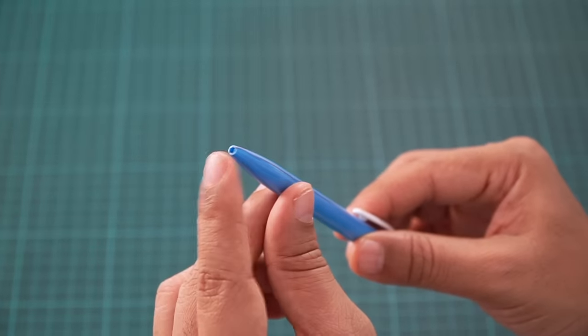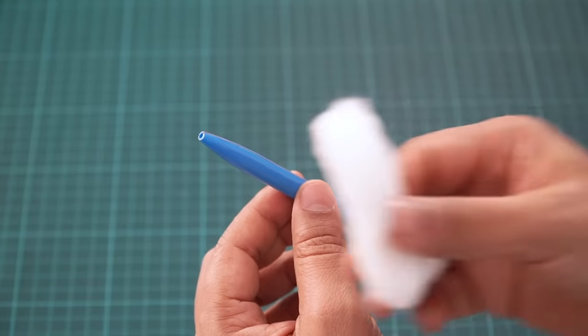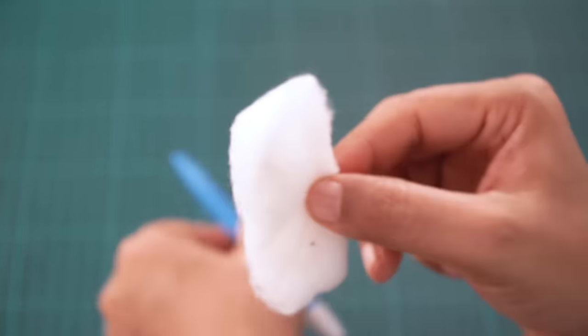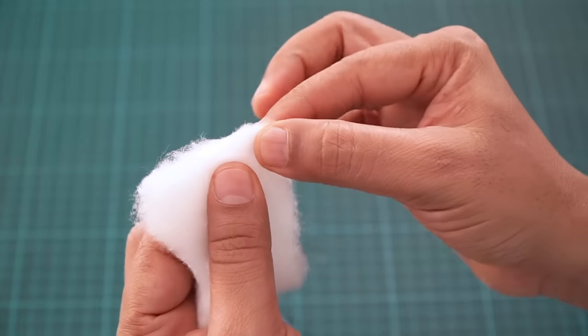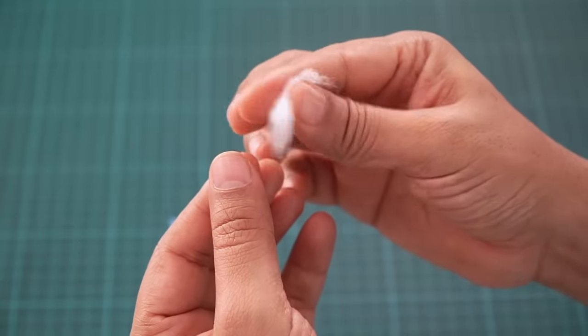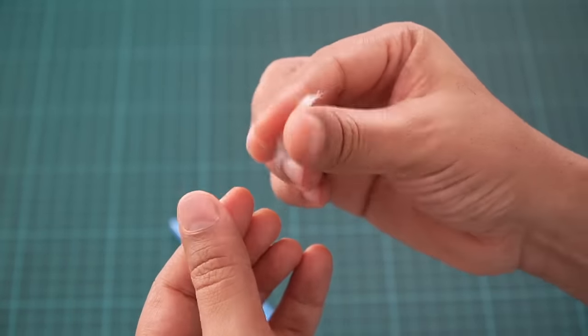Now we need to make the tip. Now to make the tip, I am going to use cotton. This is just regular cotton. So I am going to take a small piece, maybe smaller than that. And we will just roll it, actually even smaller.